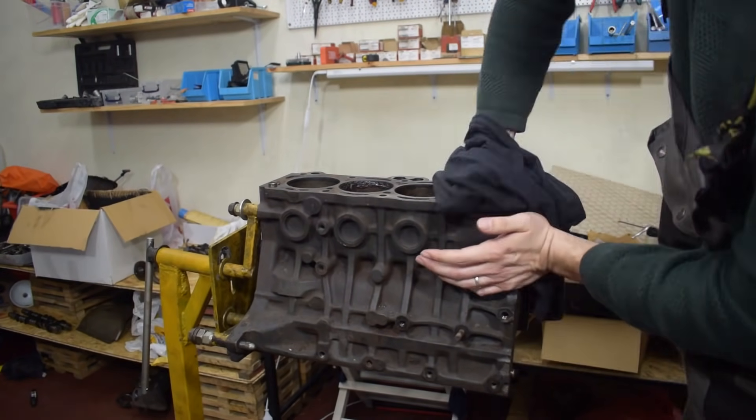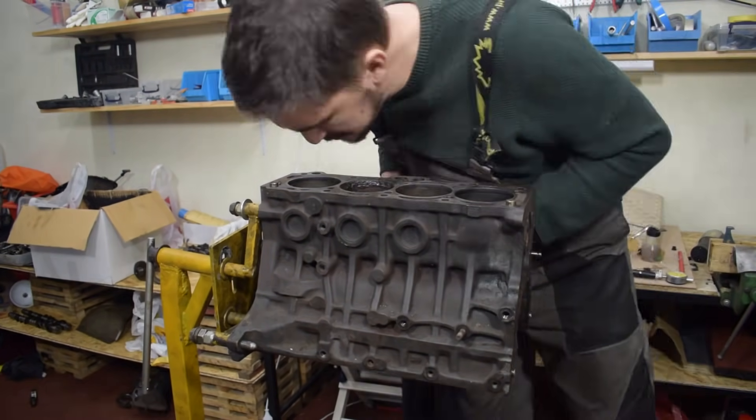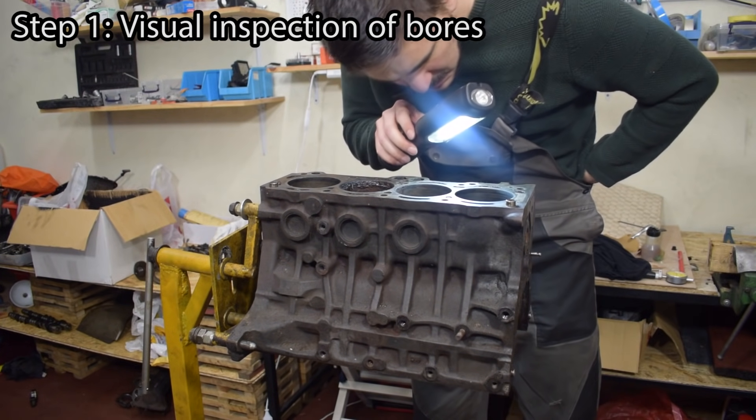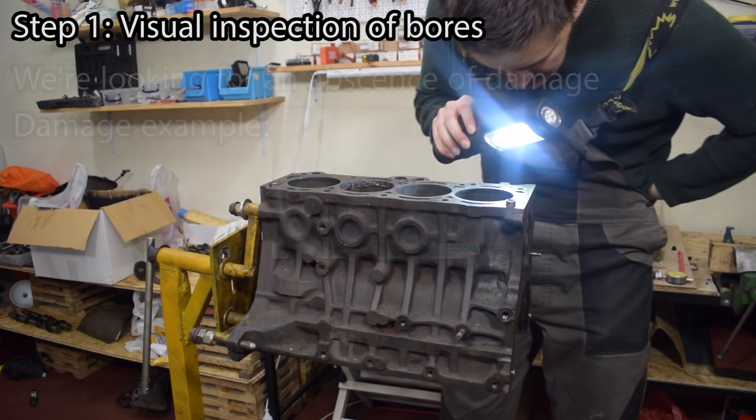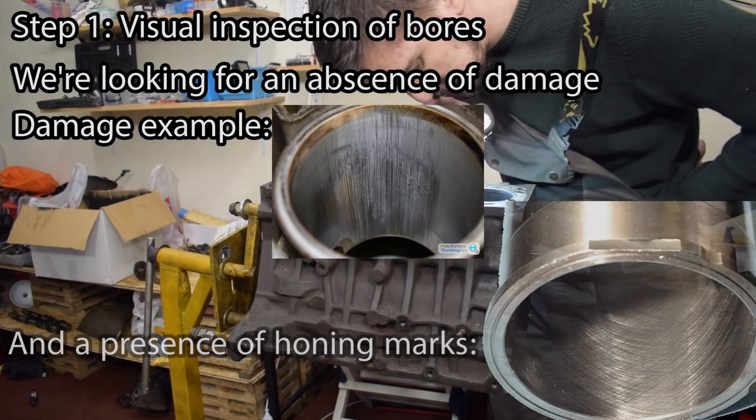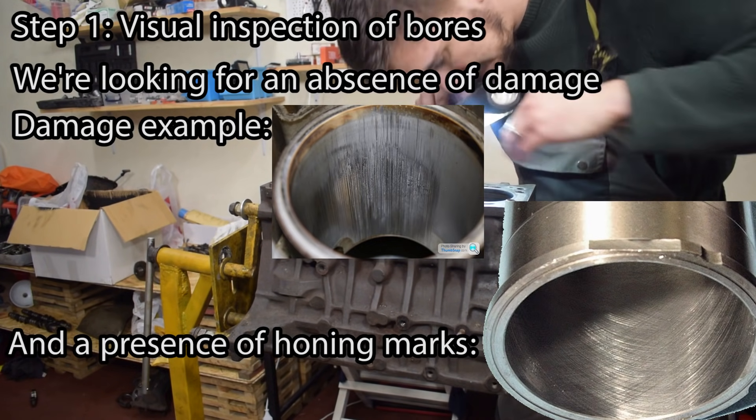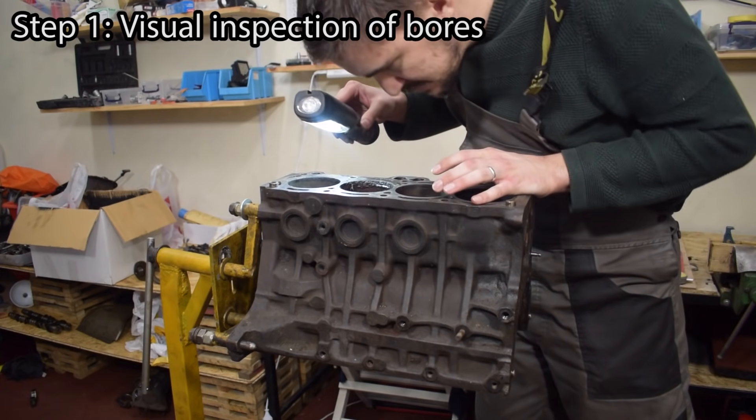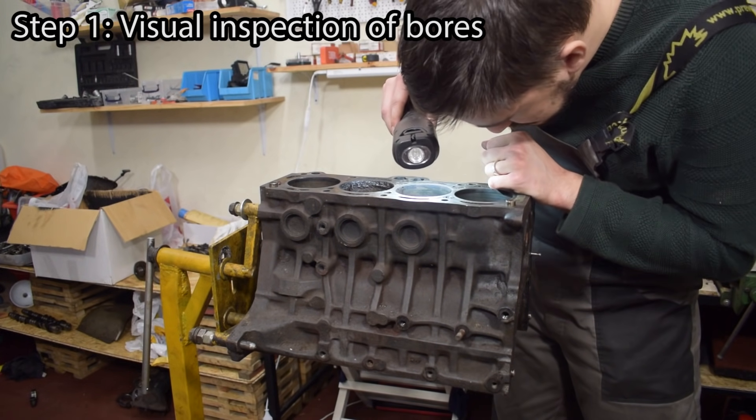The first thing we'll be doing before measuring stuff is to clean and visually inspect our bores. During our visual inspection we're looking for two things. An absence of damage in the form of deep scratches and scoring and a presence of a crosshatch honed pattern on our bores. If there's an absence of damage and a presence of honing marks your engine has passed visual inspection.